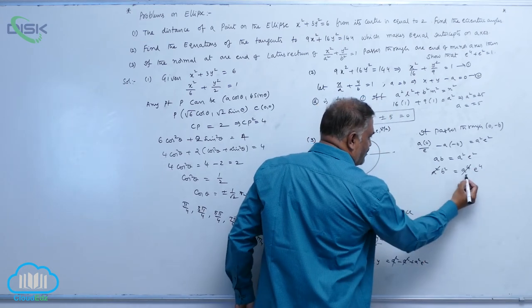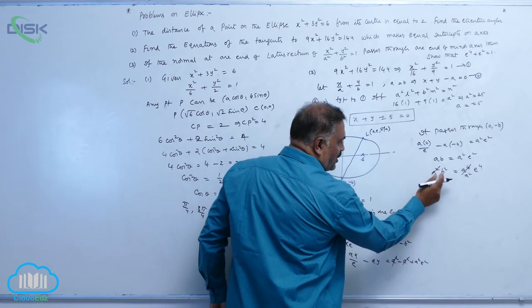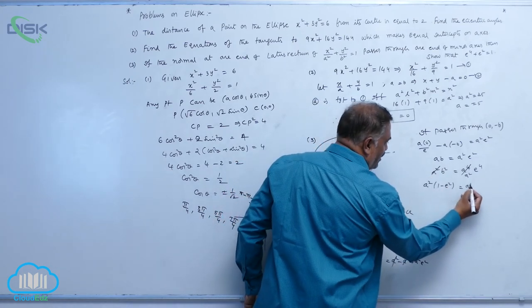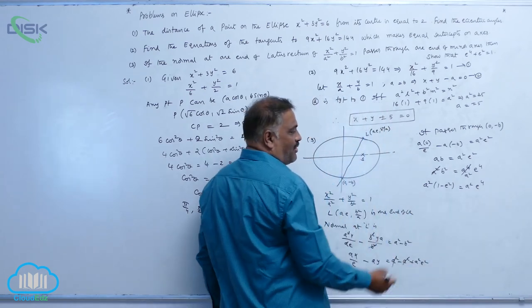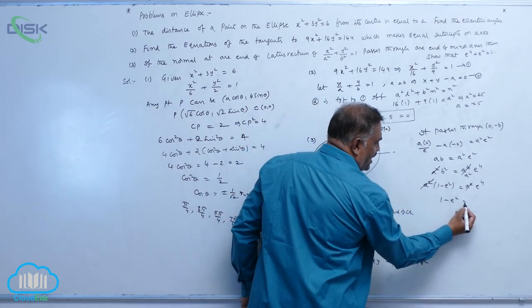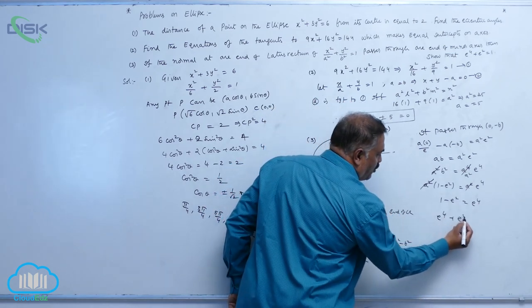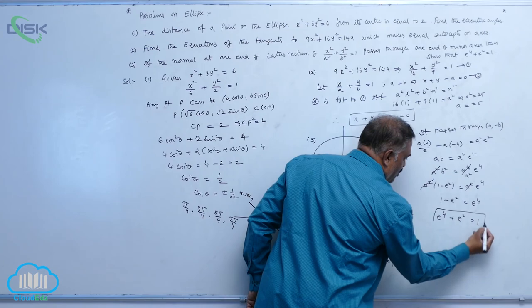A square b square equal to a power 4 e power 4. I think one a square is left over. Again, you can write b square as a square into 1 minus e square equal to a square e power 4. A square gets cancelled. 1 minus e square equal to e power 4 or e power 4 plus e square is equal to 1.